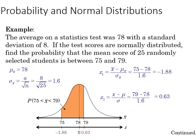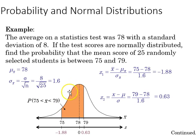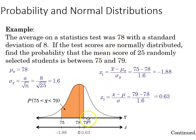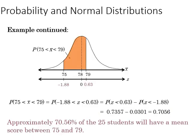Here's another example. If the average on a statistics test was 78 with a standard deviation of 8, and the test scores are normally distributed, we want to find the probability that the mean score of 25 randomly selected students will be between 75 and 79. We find the cumulative area to the left of 79 and the cumulative area to the left of 75, both converted to z-scores first, then subtract the smaller area from the larger area. That gives us 0.7056.